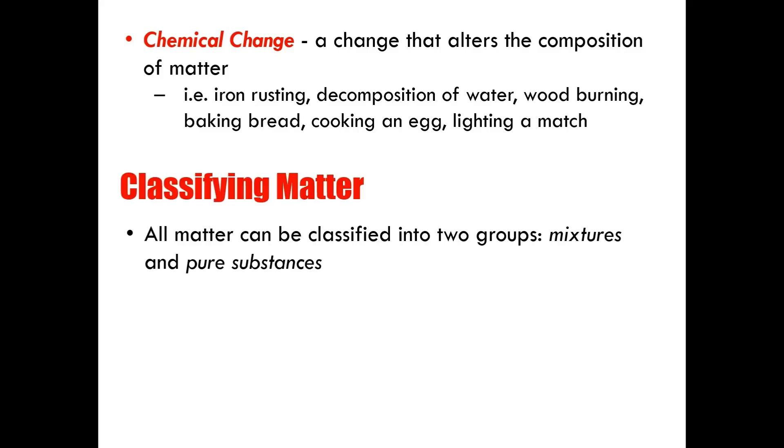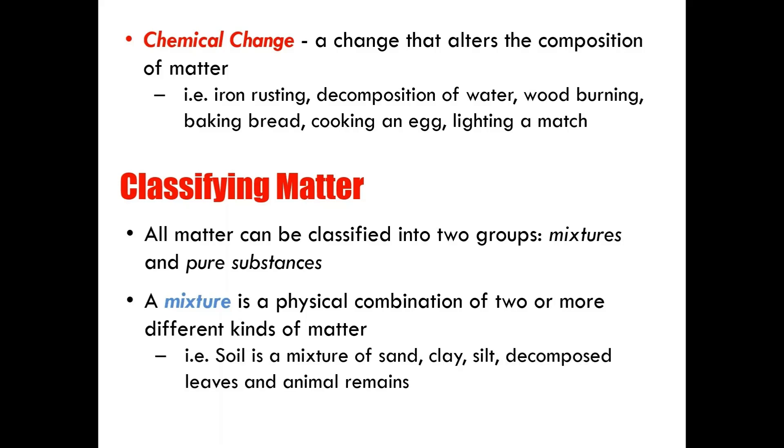And so that brings us to the classification of matter. All matter can be classified into two groups, mixtures and pure substances. A mixture is a physical combination of two or more different kinds of matter. Soil, for example, is a mixture of sand, clay, silt, decomposed leaves, and animal remains.